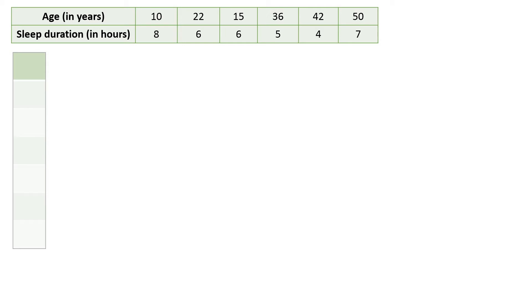We're going to start with column X. We're going to put the data of age: 10, 22, 15, 36, 42, and 50.